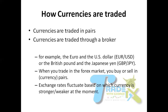Finally, exchange rates fluctuate based on which currency is stronger or weaker at any moment. Since currencies are paired, it is like a tug of war — activity is going on at both sides, creating imbalance. At one point one currency will be stronger, and at another point it will be weaker. These fluctuations enable us to trade in the market.